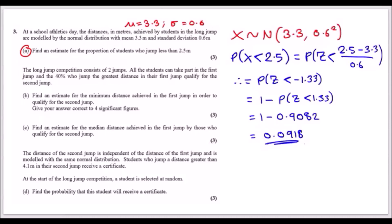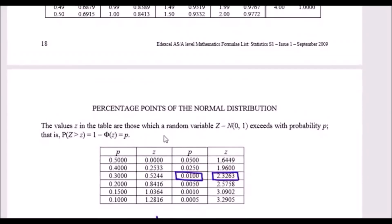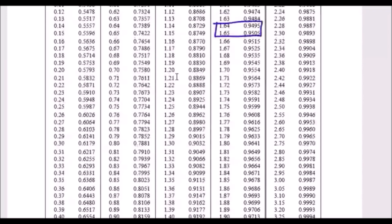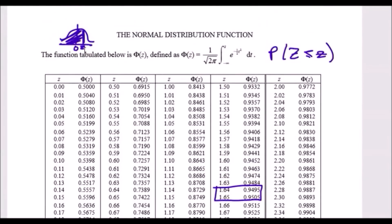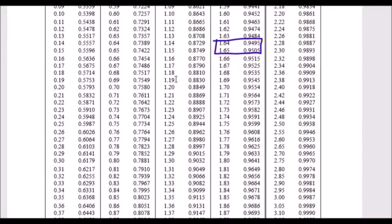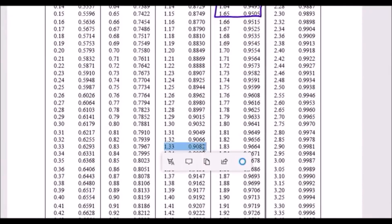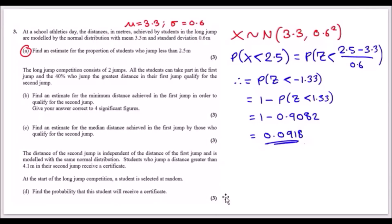Scanning the Z-table for 1.33, we find 0.9082. Remember, the big table only works for less-than-or-equal probabilities — it covers the left-hand side of the distribution. So find 1.33, giving 0.9082, and the answer is 1 − 0.9082 = 0.0918.